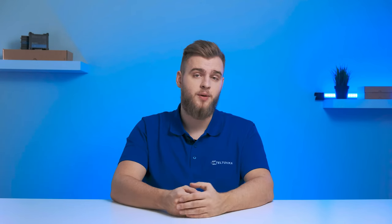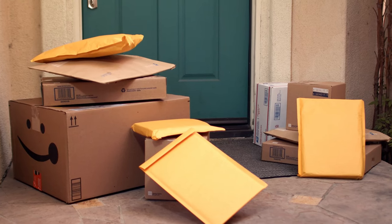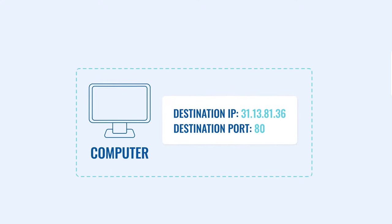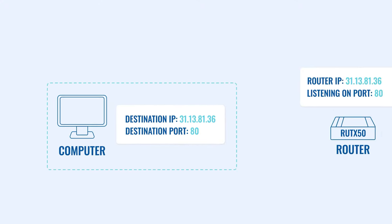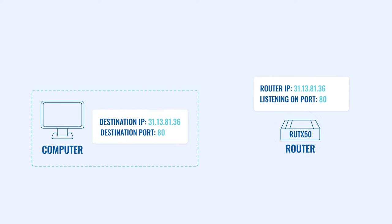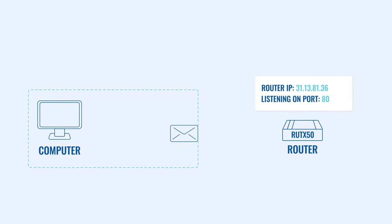Coming back to the apartment building analogy, if you want to send a letter to your friend that lives in apartment 24, you must include this number in the envelope. The same goes for sending information through a specific port — your device adds the router's IP address as the destination and a particular port number that depends on the service you're trying to reach.